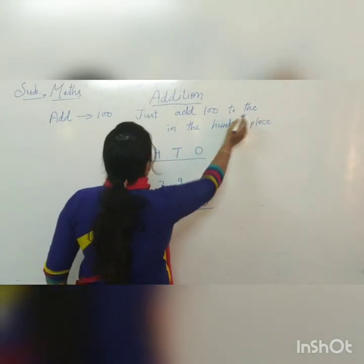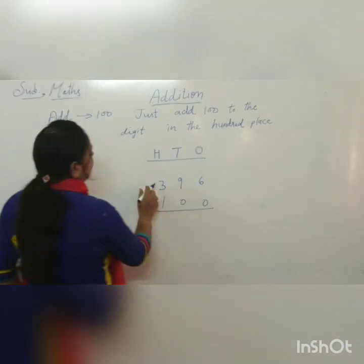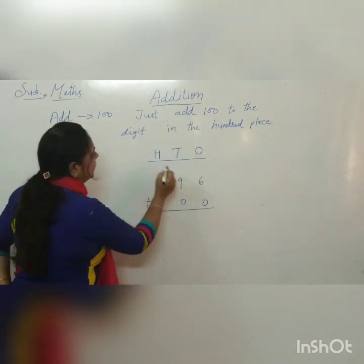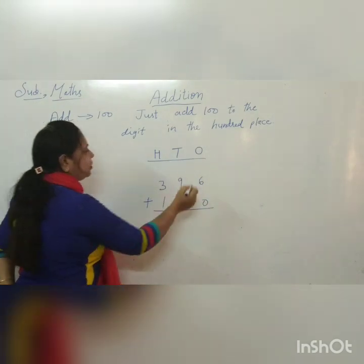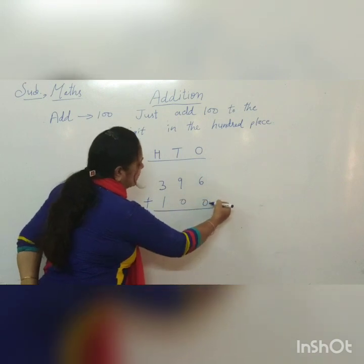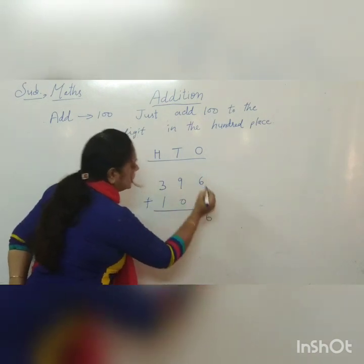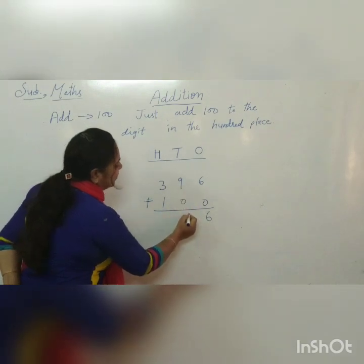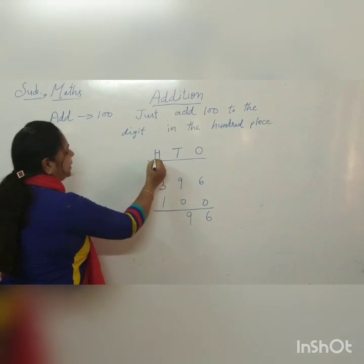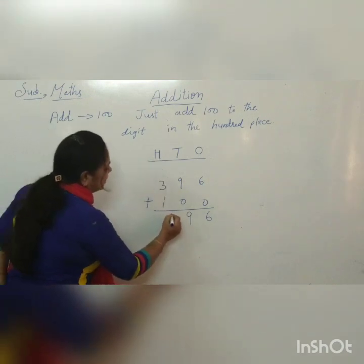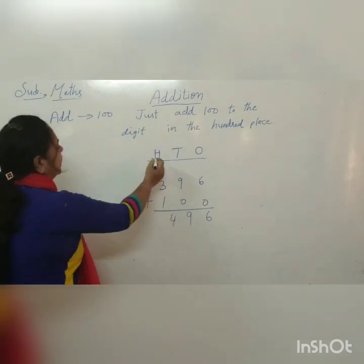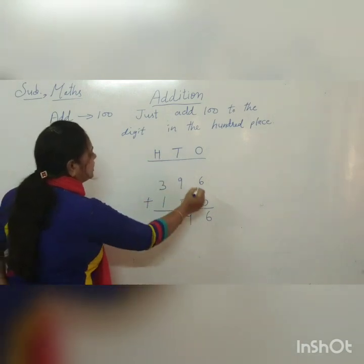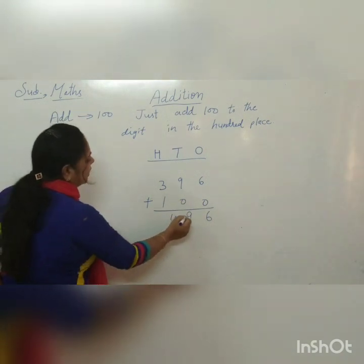Adding 100: just add 1 to the digit in the hundreds place. For 3 hundreds, 9 tens, 6 ones plus 1 hundred, 0 tens, 0 ones — starting from the ones place, 6 plus 0 is 6. In the tens place, 9 plus 0 is 9. At the hundreds place, 300 plus 100 equals 400. So the number becomes 496.